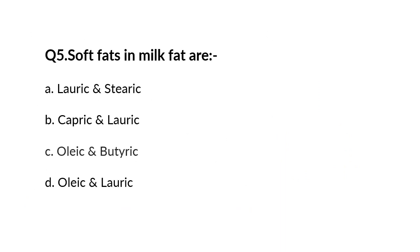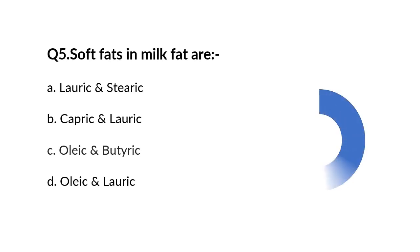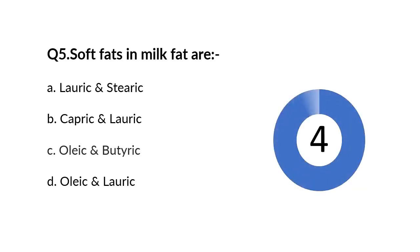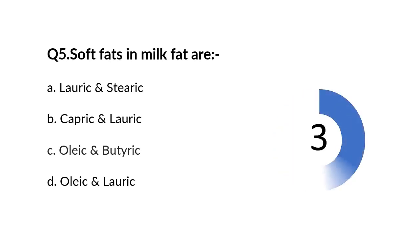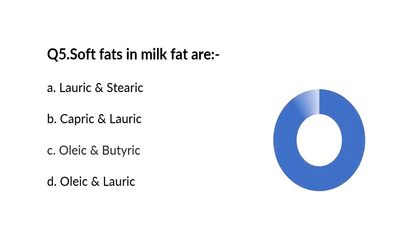Question number 5. The soft fats in milk fat are A lauric and stearic, B capric and lauric, C oleic and butyric, D oleic and lauric. Answer is C oleic and butyric.